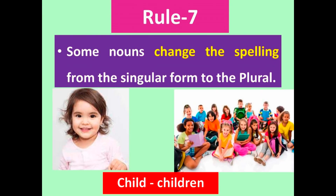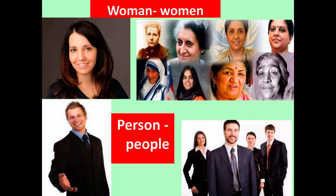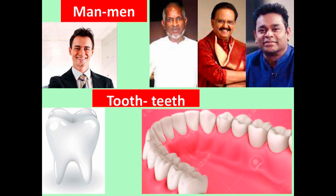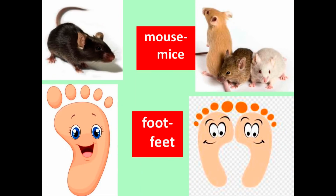Rule number seven: some nouns change the spelling from the singular form to the plural. Child → children, woman → women, person → people, man → men, tooth → teeth, mouse → mice, foot → feet.